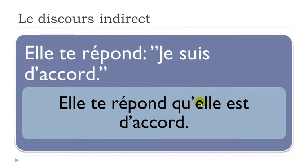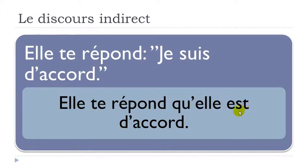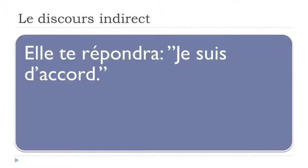Remember, 'que' is the key element of discours indirect. In this case it becomes 'qu'' because there's a vowel after. 'Je' is transposed to 'elle,' and the verb changes accordingly. If you look carefully, the first structure is at the present form and the indirect structure stays at the present form too — so no big changes are needed.